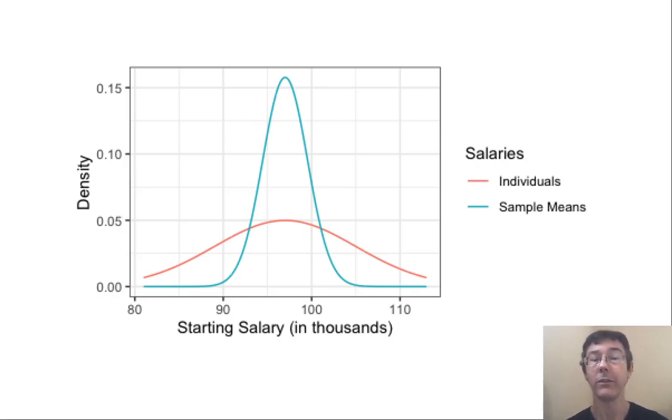In blue, I'm showing sample means. So go out, sample 10 randomly selected data scientists, and take their mean starting salary. Do it again, again, and again.